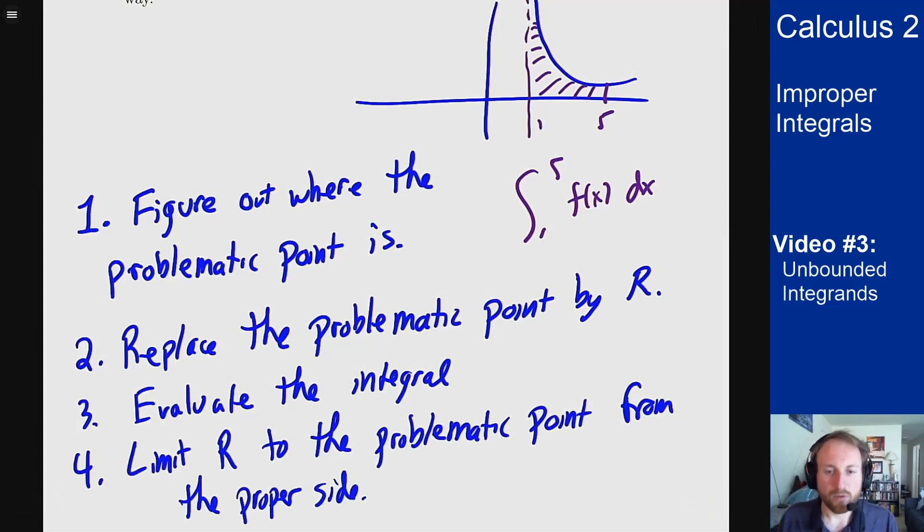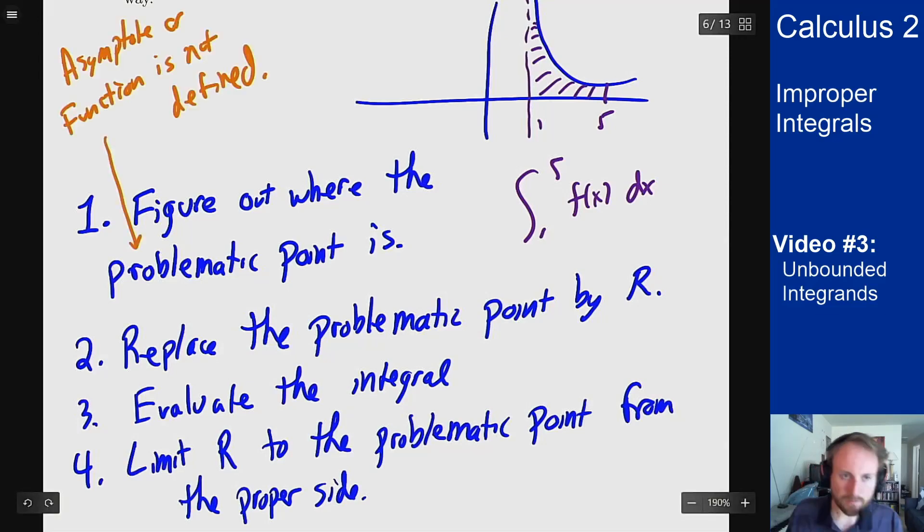Now what do I mean by problematic point? I basically mean an asymptote of the function or a place where the function is not defined. That's really how we're going to know where you have a problematic point. A denominator being zero or something like that will tell us this is an issue. I should approach this problem carefully and look at it like it's an improper integral to make sure I don't mess something up in the process.